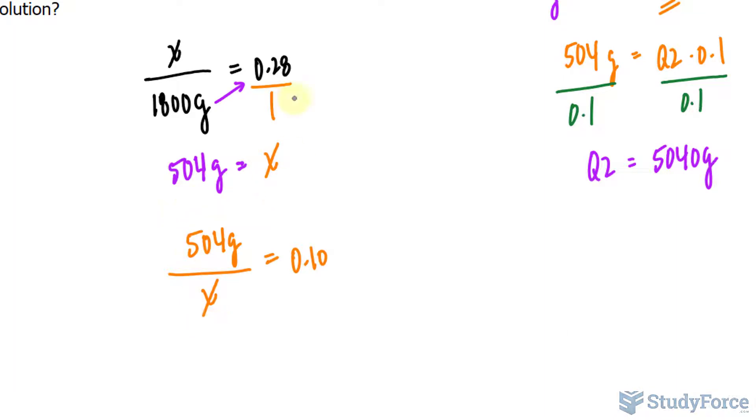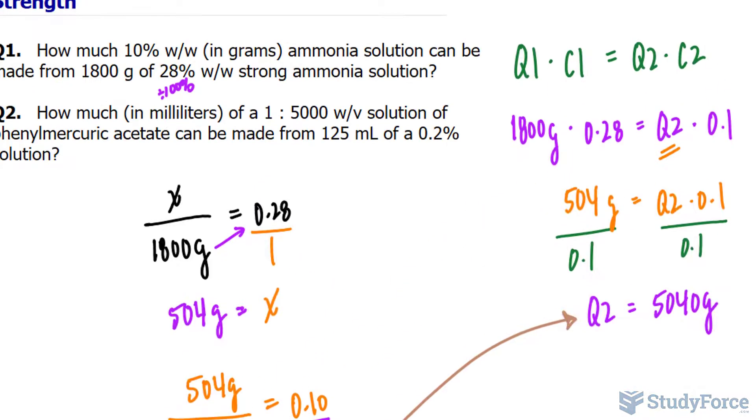By solving for X using the same way as before, cross-multiplying, you should end up with a value that is 5,040 grams. And that's precisely what we found when we did it this way. So really, it depends on you whether you want to take this route or the active ingredient route. Sometimes it's better to take the active ingredient route, because sometimes the question might ask you for the amount of active ingredient as well.